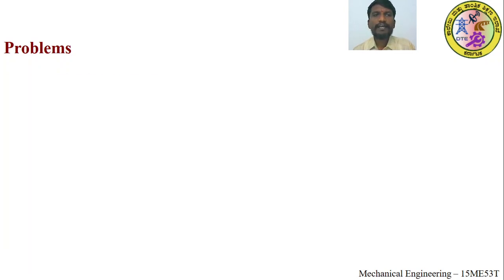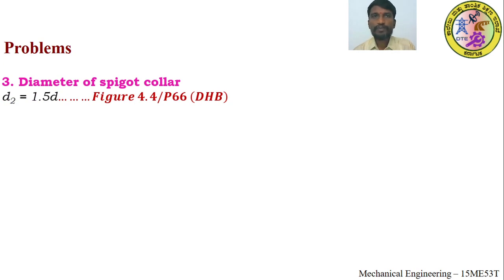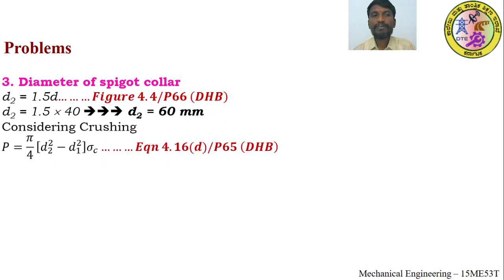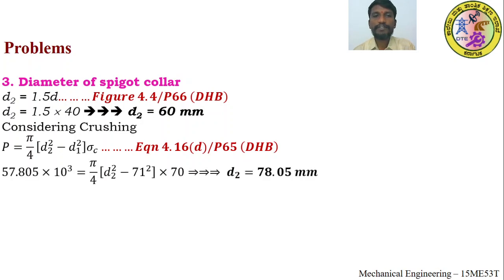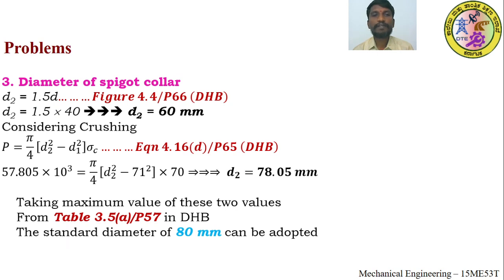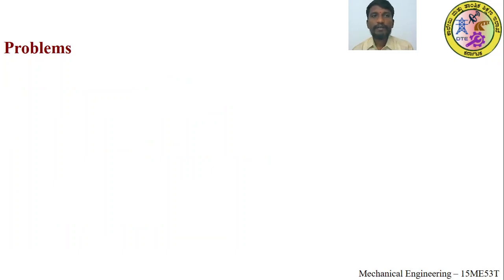Point 3 — Diameter of spigot collar d2: From figure 4.4 (page 56), d2 = 1.5 × d = 60 mm. Considering crushing (equation 4.16d, page 65), d2 = 78.05 mm. Taking the maximum and referencing standard table 3.5a (page 57), the standard value of d2 — diameter of spigot collar — is adopted as 80 mm.